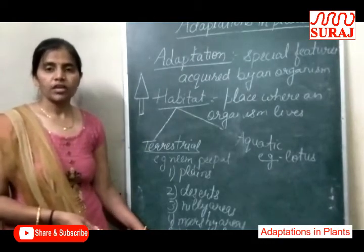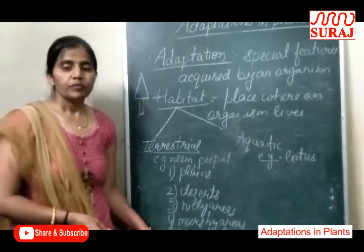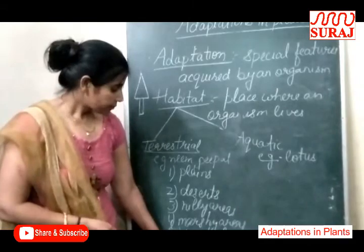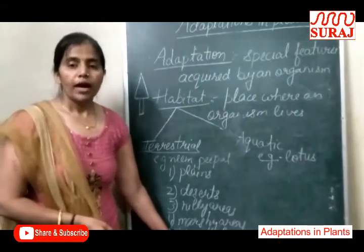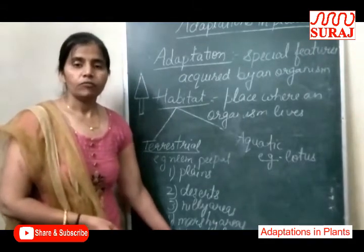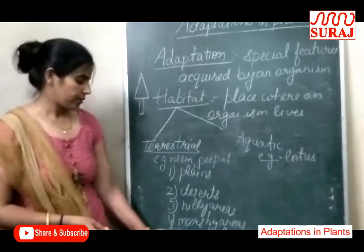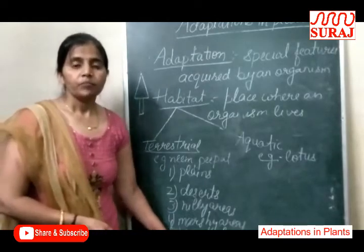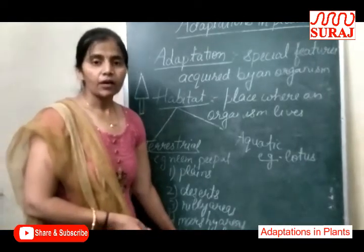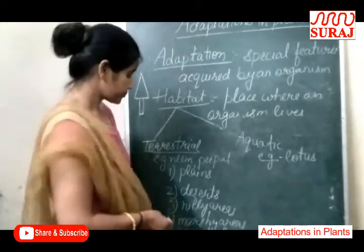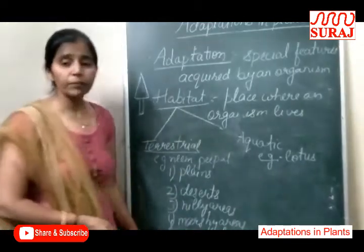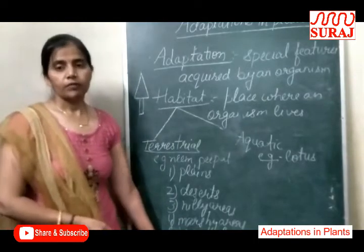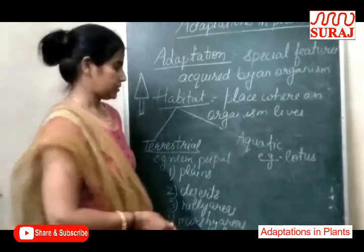Now, Coastal Area plants — plants that grow in coastal areas are well adapted to a wet climate, because the climate of coastal areas is wet and hot. Examples: Coconut, Teak, Rubber, etc.